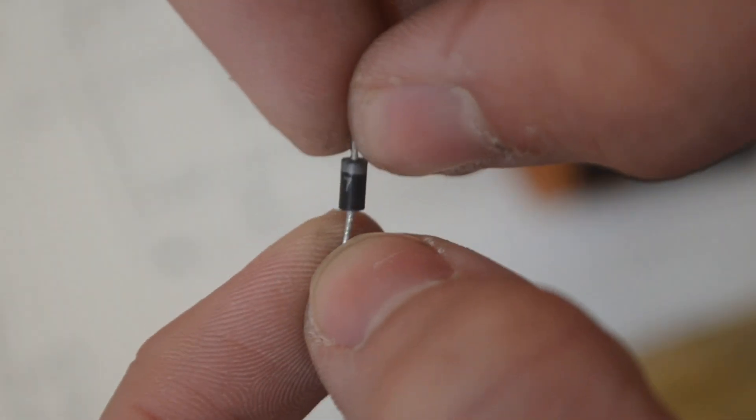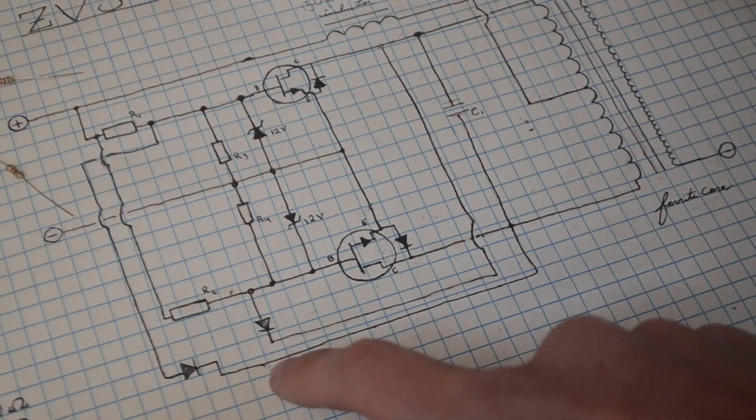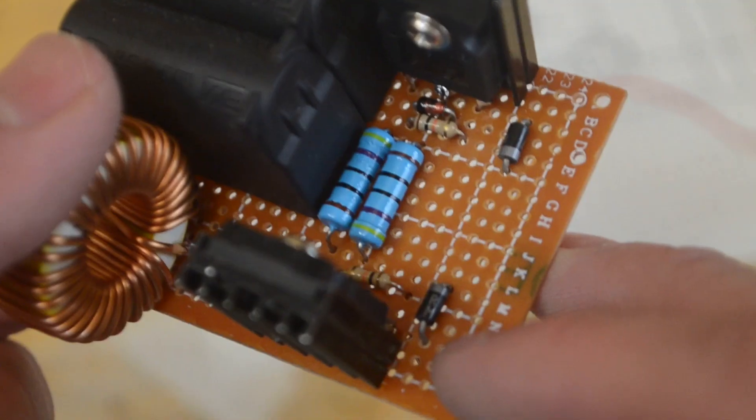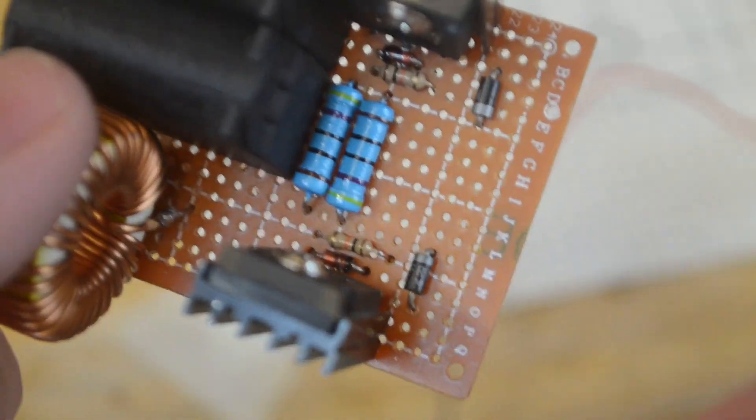Now as the last thing to add I have two of these FR107 ultrafast diodes. On the schematic these two diodes are these two guys right here and here. The silver ribbon on these diodes represents this side of the diode on the schematic. Okay so as you can see I've put the two diodes onto the perf board just like this.